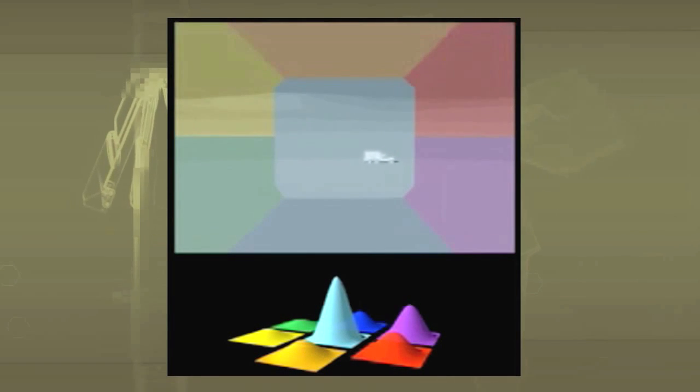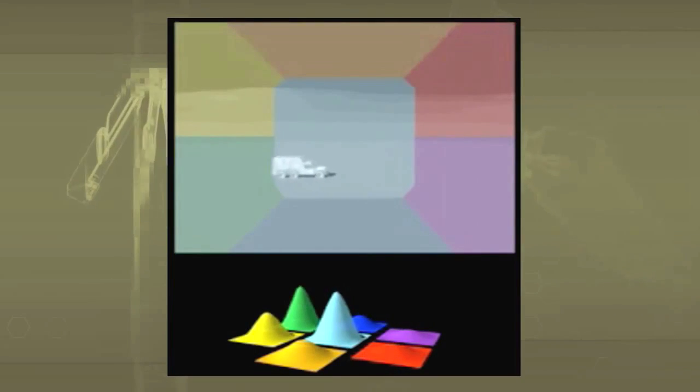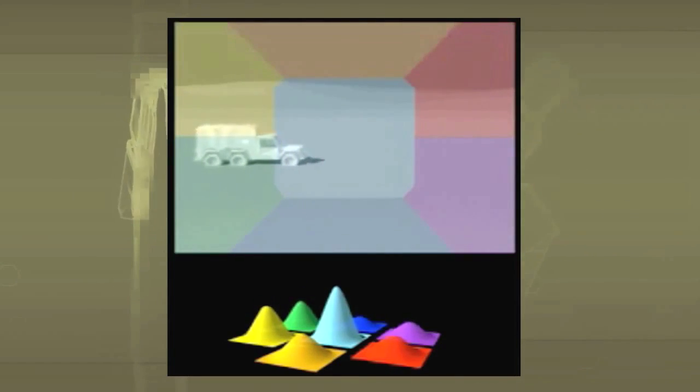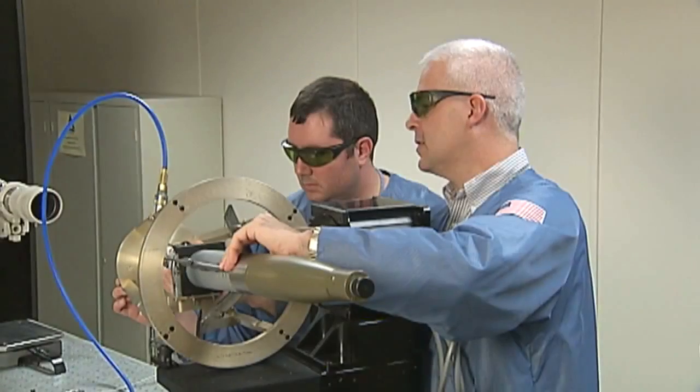During flight, the seeker electronics interpret the intensity of the laser energy and determine the angle to the target. This information is sent to the guidance system. The proportional navigation software maintains the closure angle for stationary and moving targets.